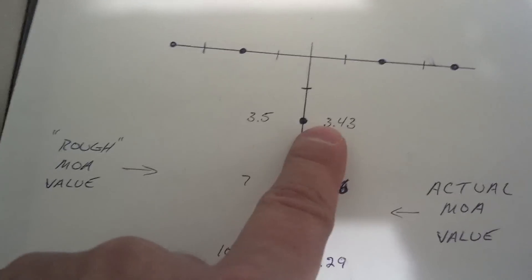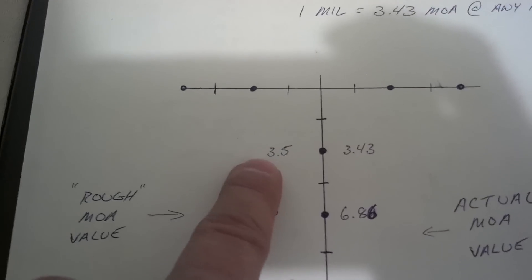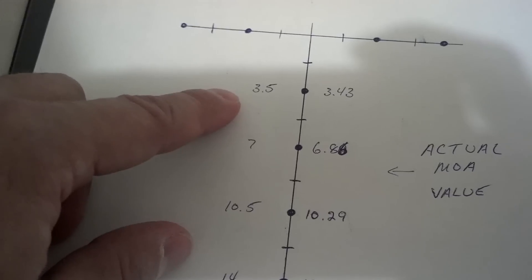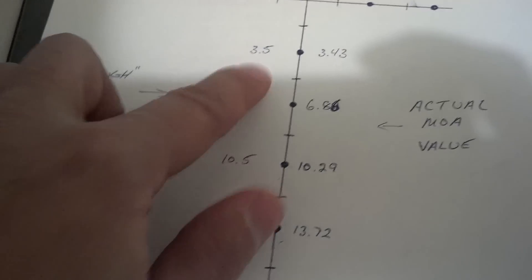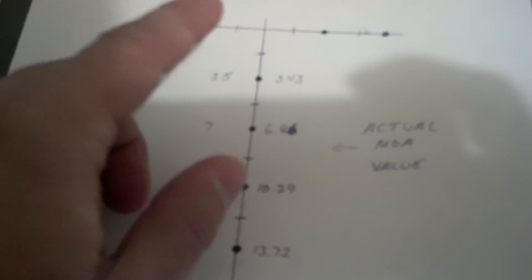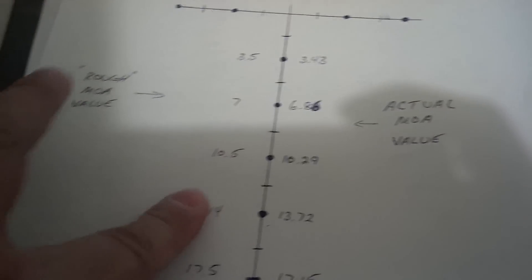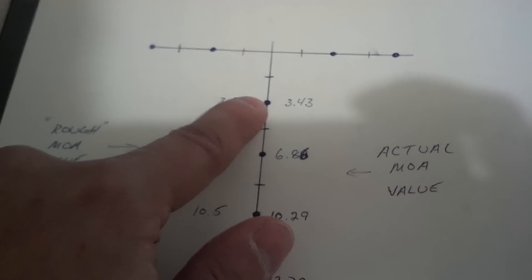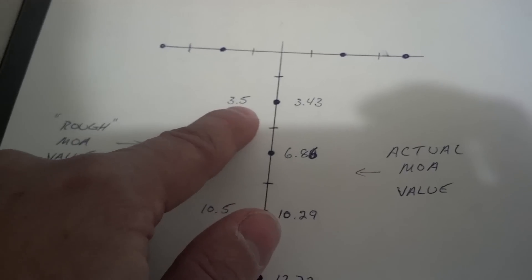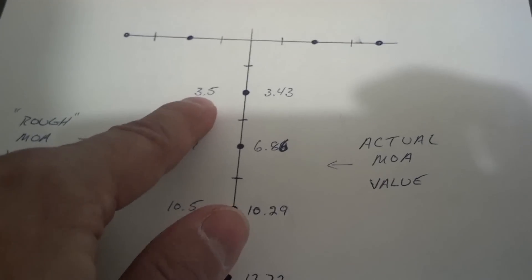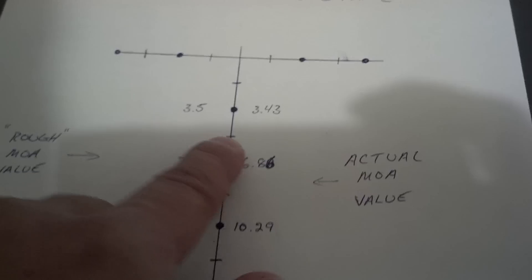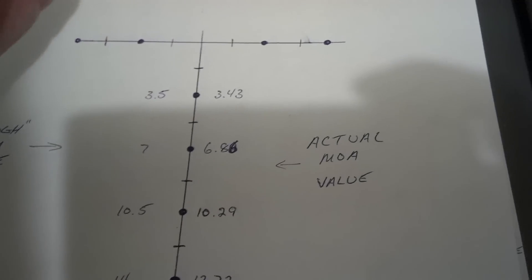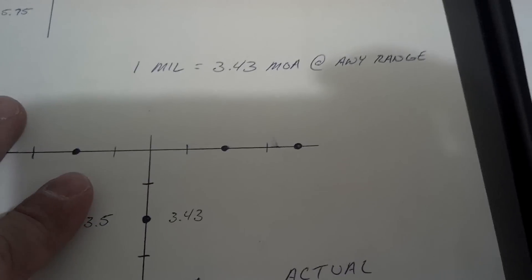We know that the true value is 3.43, but we round to 3.5 for easy math. So: 3.5, 7, 10.5, 14, 17.5. A half mil would be 1.75. So if you needed 1.5 mils: 1.75 plus 3.5 is 5.25 — there's your answer. It's pretty easy to understand if you take it one step at a time. That's mil-minute adjustments in a nutshell. Hope this helps.